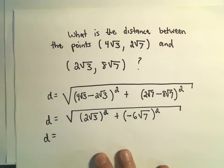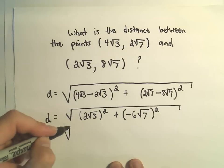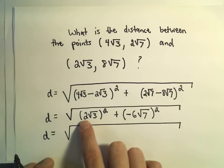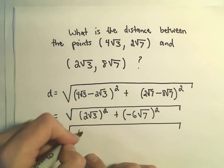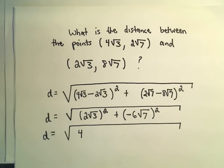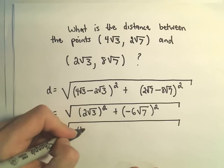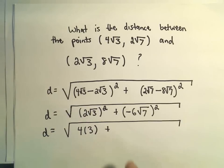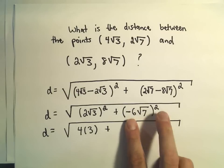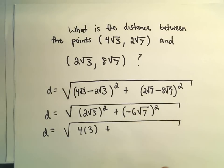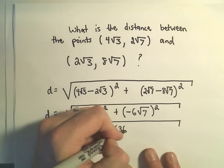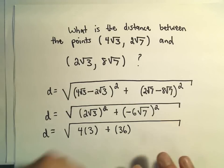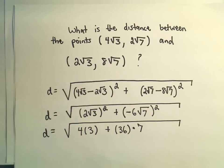Now let's be a little careful on our arithmetic. We've got to square each number, so 2 times 2 would be 4. The square root of 3 times the square root of 3 would just give us a positive 3, plus, if we take negative 6 and square it, negative 6 times negative 6 would be positive 36, and then the square root of 7 times the square root of 7 gives us positive 7.